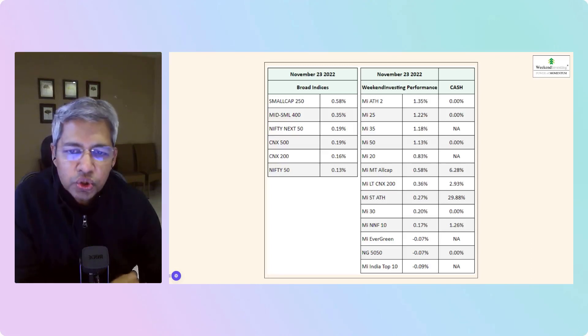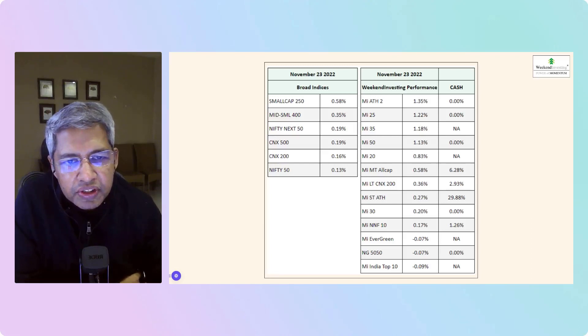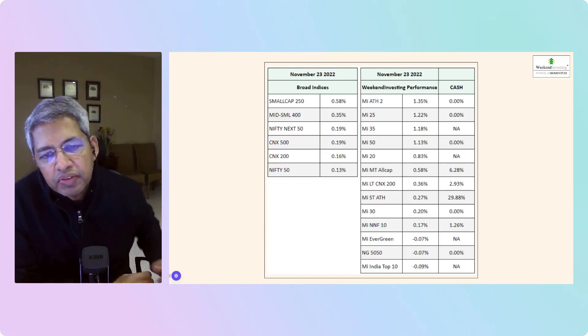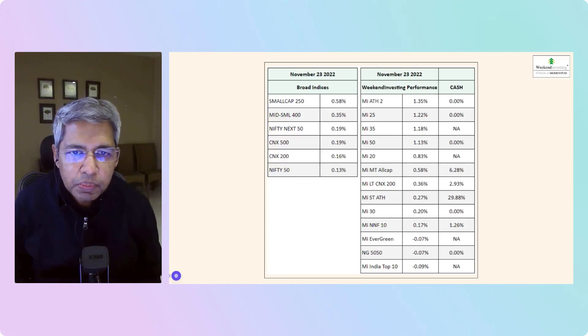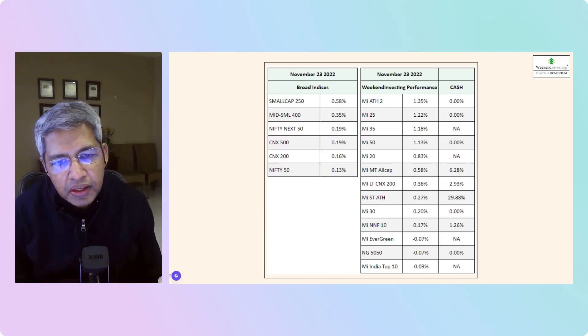Within the Weekend Investing small cases, several strategies doing quite well. MI50, MI35, MI25, all which have small cap flavor, gaining more than 1%. MI80 H2, which has come back very strongly after its sputtering start last year, up 1.35%.